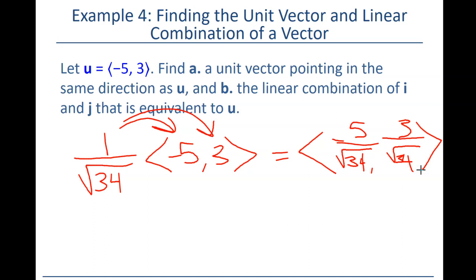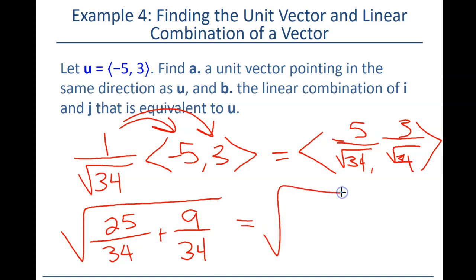What's the magnitude of this? The magnitude of this thing is the square root of the x component squared, so the top squared would be negative 5 squared would be positive 25. The bottom squared is the square root of 34 squared, which is 34, plus the 3 squared, the numerator squared is 9, the denominator squared is 34. We got common denominator, so we just add numerators, and we get 34 over 34, which is 1, and the square root of 1 is 1.